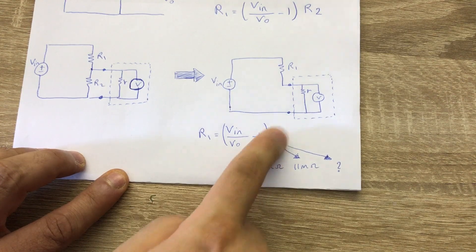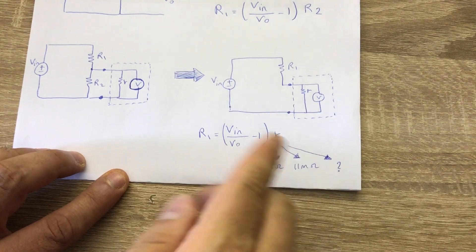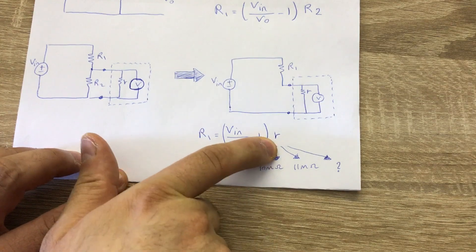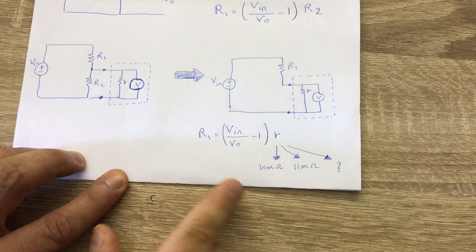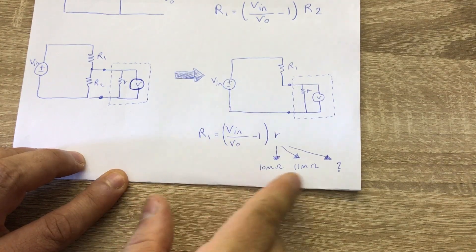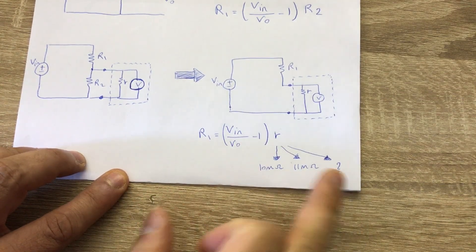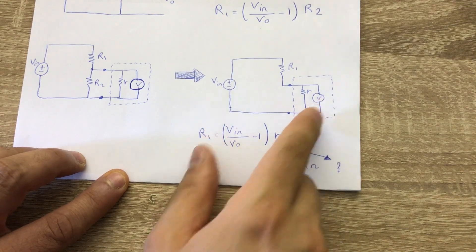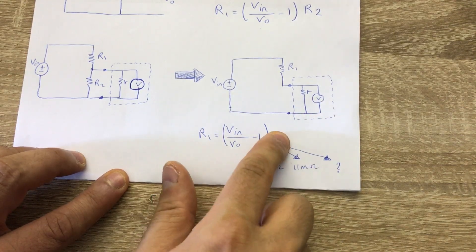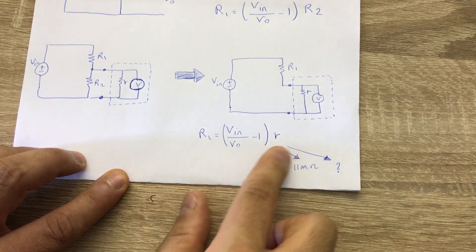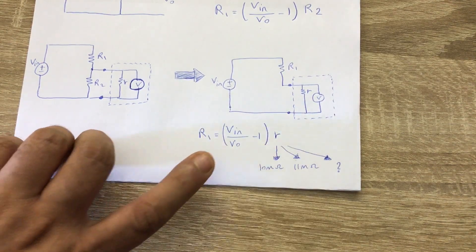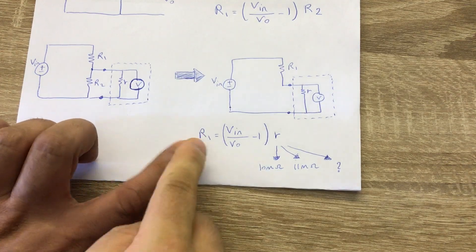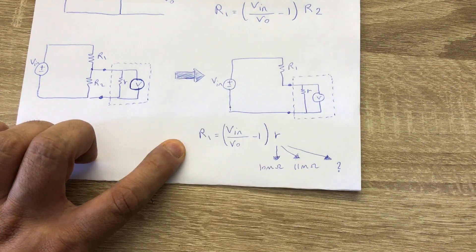Depending on the multimeter and the voltage range selected, this internal resistance can be different — it can be 10 megaohm, 11 megaohm, or even gigaohm range. So first we have to measure it, and once we know it, we can use the same formula to calculate the unknown resistance R1.